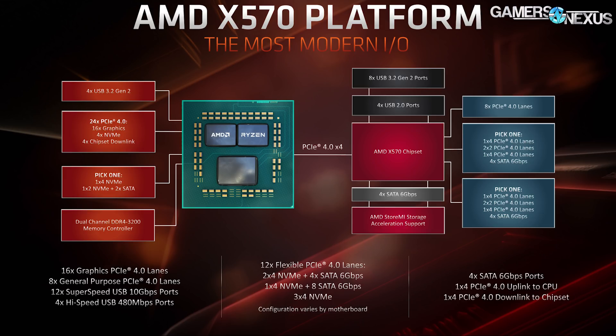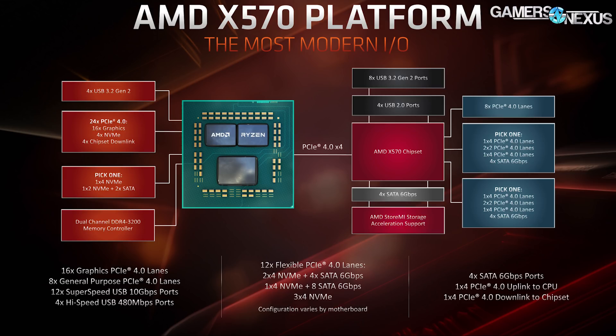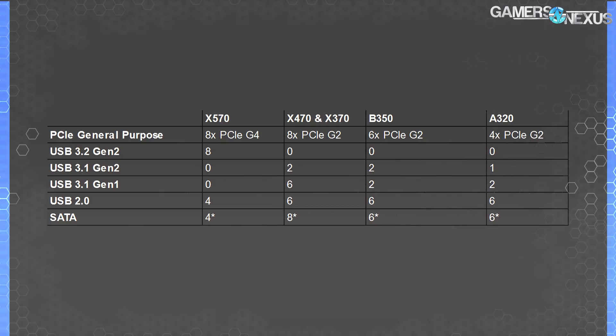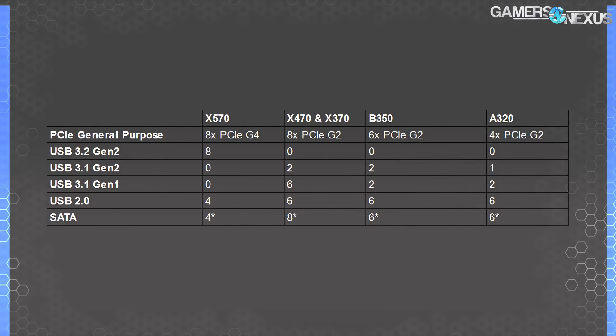The chipset natively supports four SATA 3 ports, which can be increased by using one of the pick-one choices for an additional four, or by using an external controller. Here's a chart comparing X570 versus the previous generation — the biggest change is obviously Gen 4, as all PCIe lanes on X570 are Gen 4, which didn't exist on desktop platforms previously.